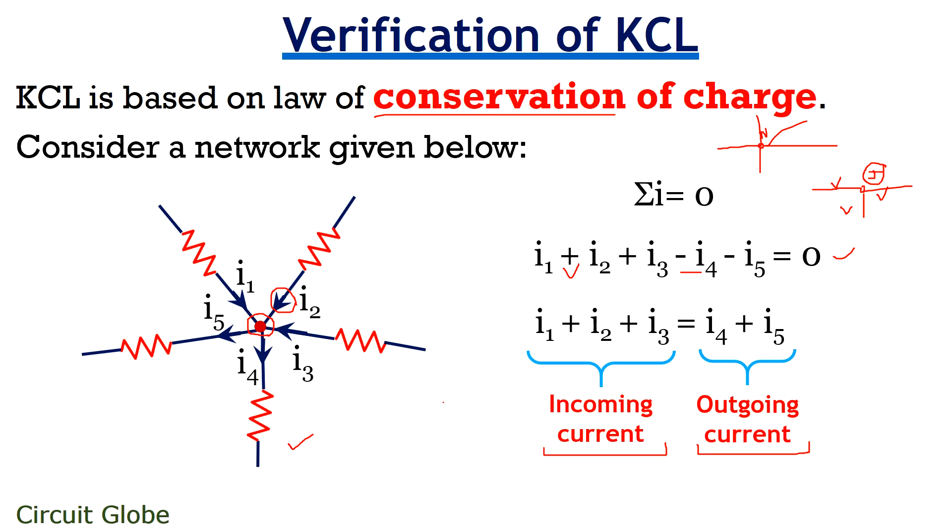So as we can see that this particular node is having five branches. So it can also be considered as a junction because it has more than three branches. So we can say that every junction is a node. But all the nodes are not junction. I think by now you are having proper idea about KCL.